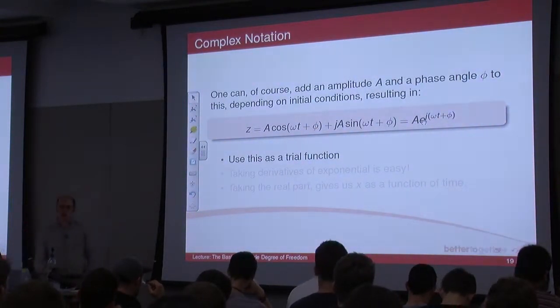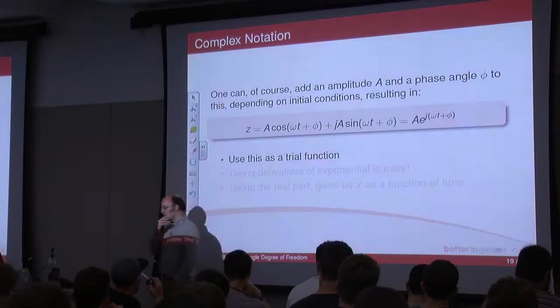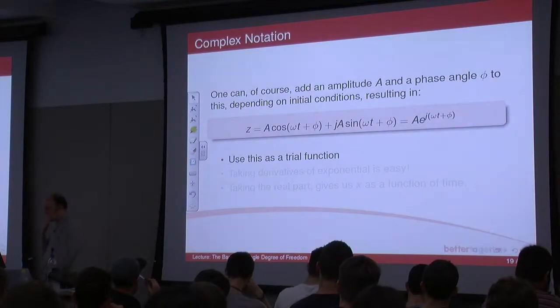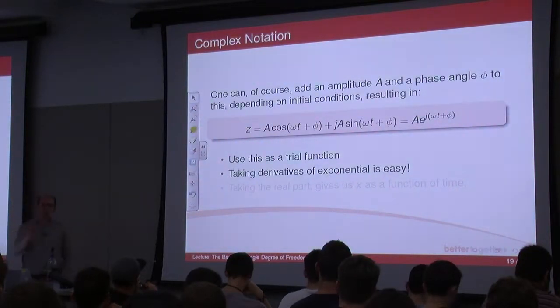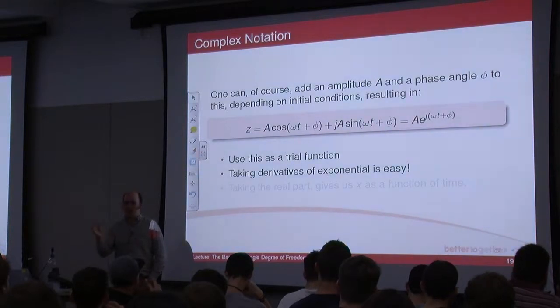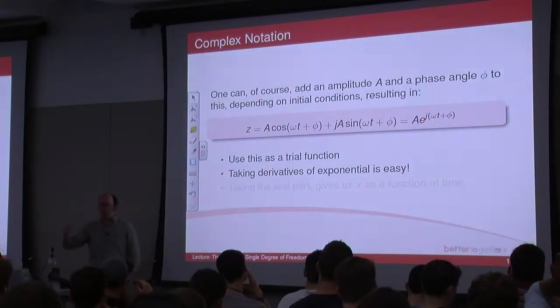So, we can use this bit, this complex bit, as a trial function. So, when we use cosine omega t as a trial function, we tested it out, it showed that it worked, we could actually use e to the j omega t as a trial function. And taking derivatives, this is an example of where it's easy, taking derivatives of e to the X, or e to the anything, is easy because it's the same thing. The derivative of e to the X is e to the X. That's one of the magic things about e.